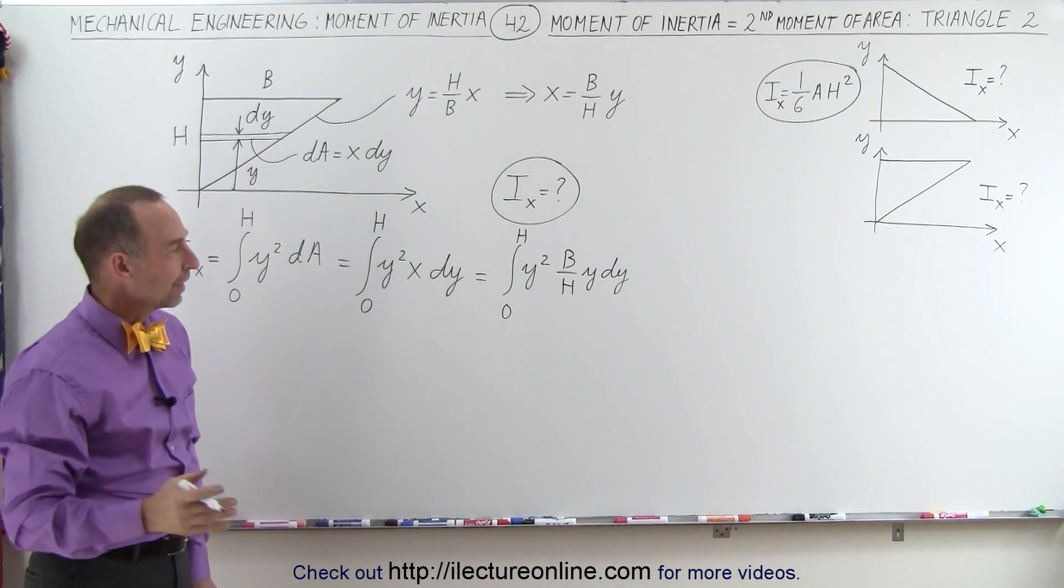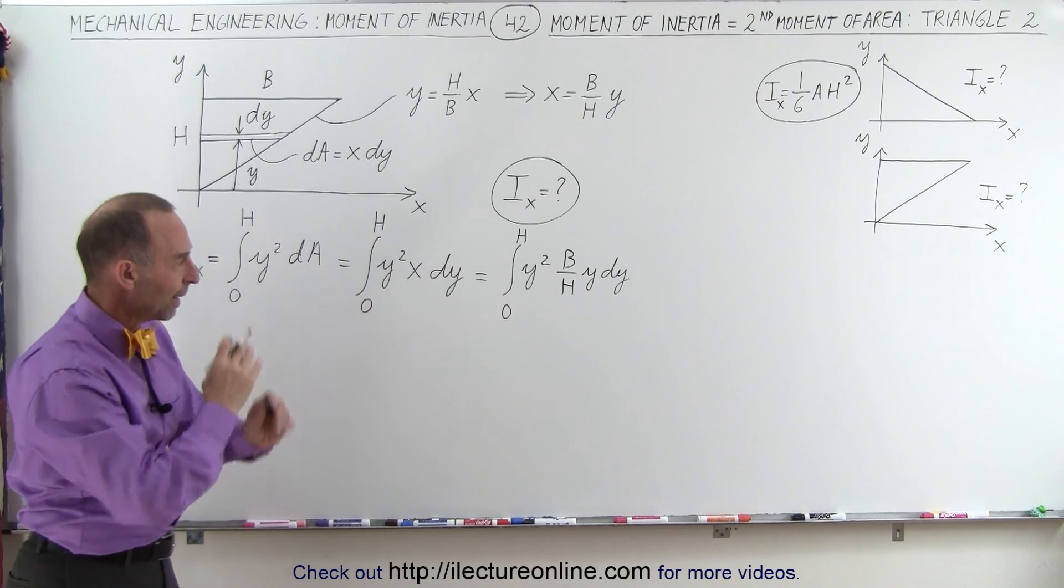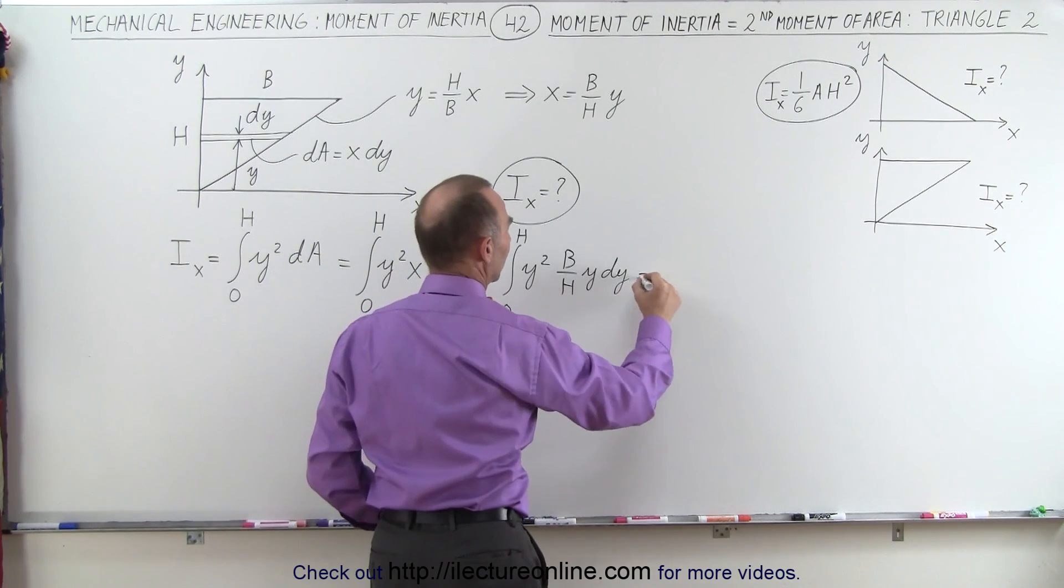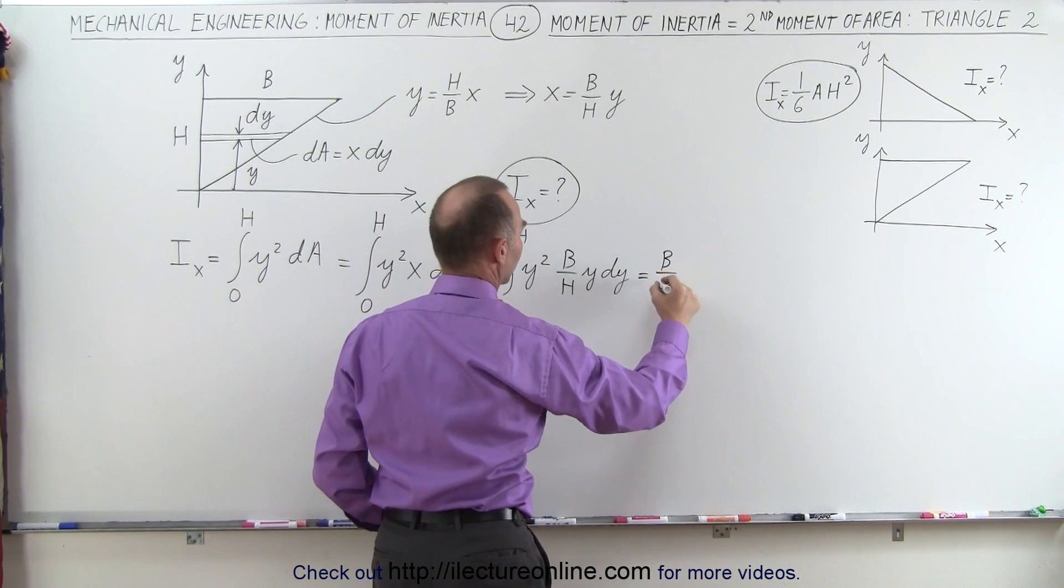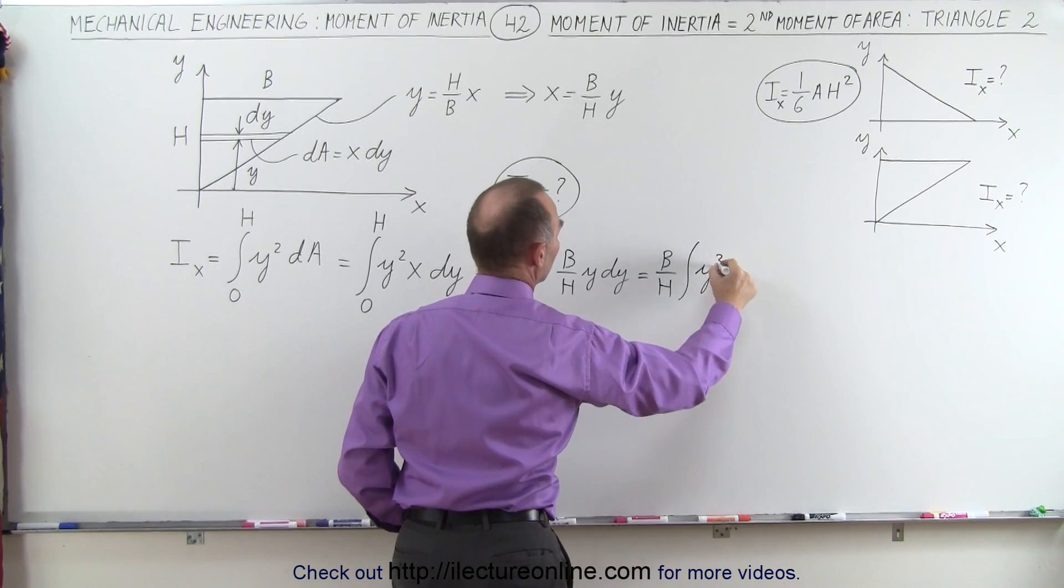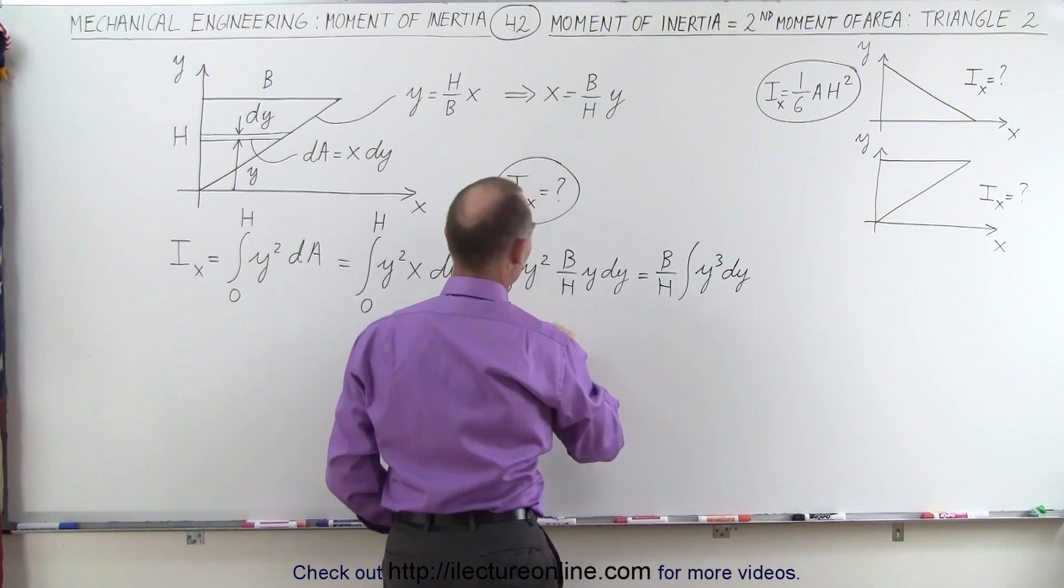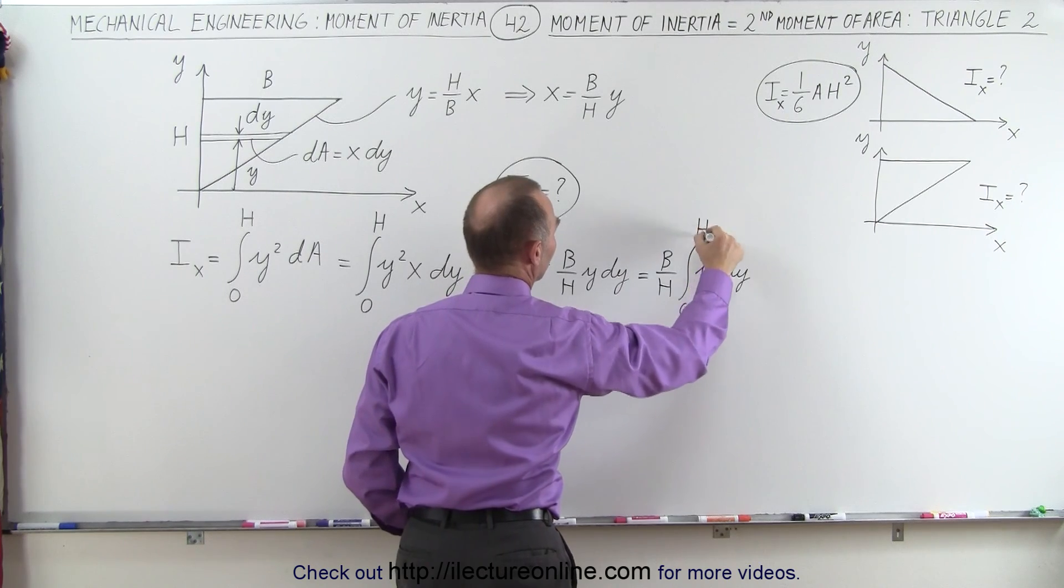And then taking b over h outside the integral sign, combining the y's, this becomes equal to b over h times the integral of y cubed dy, integrated from 0 to h.